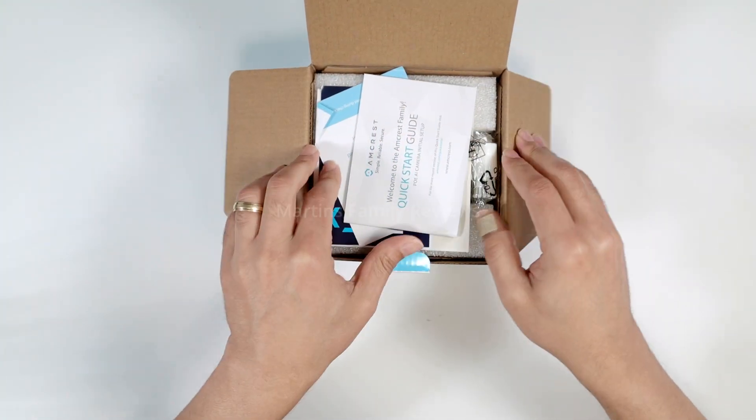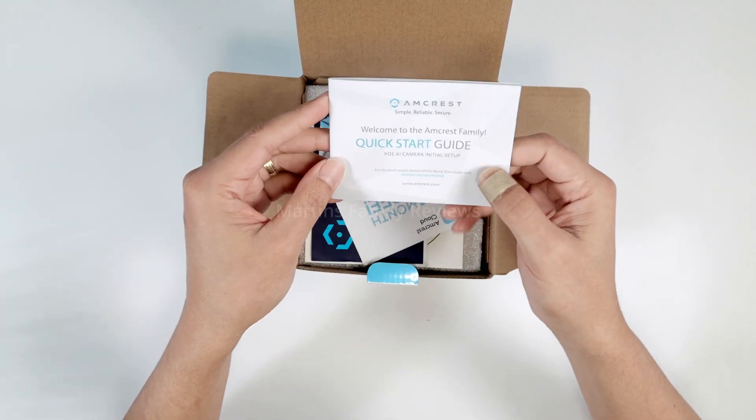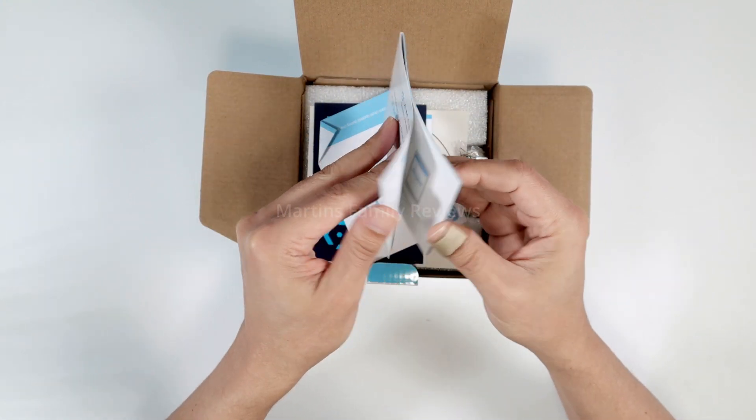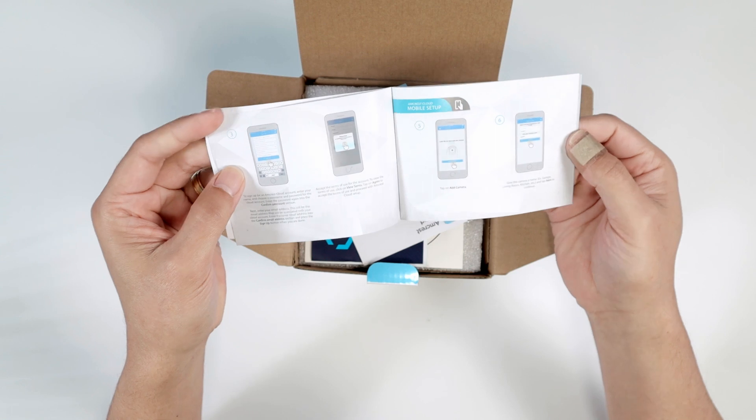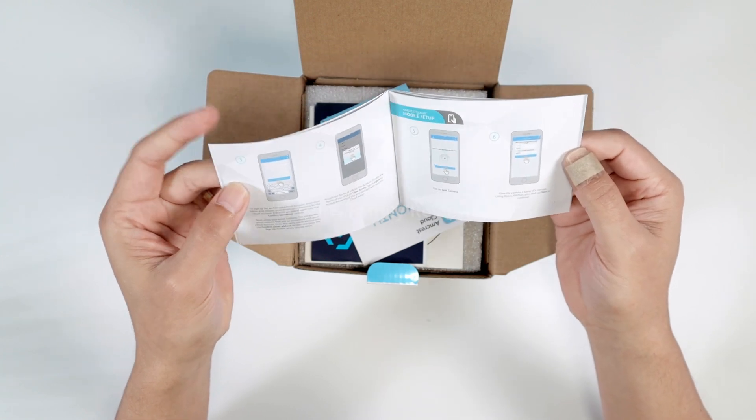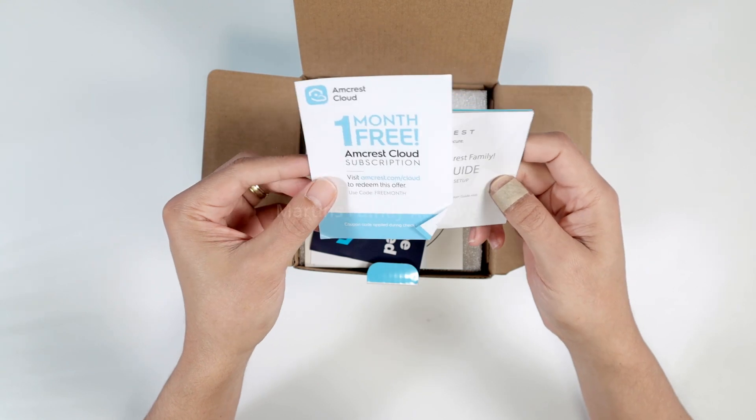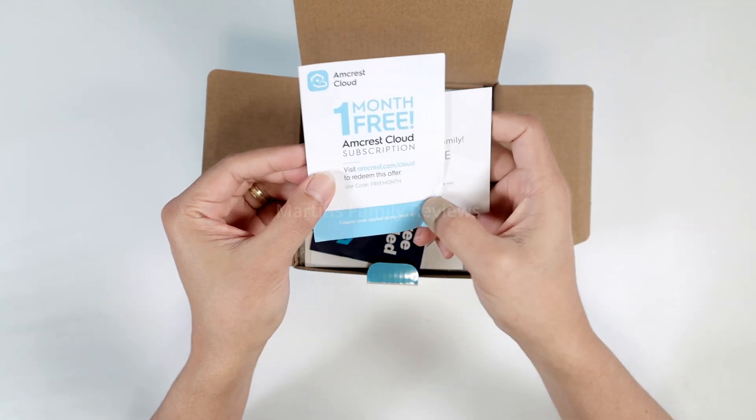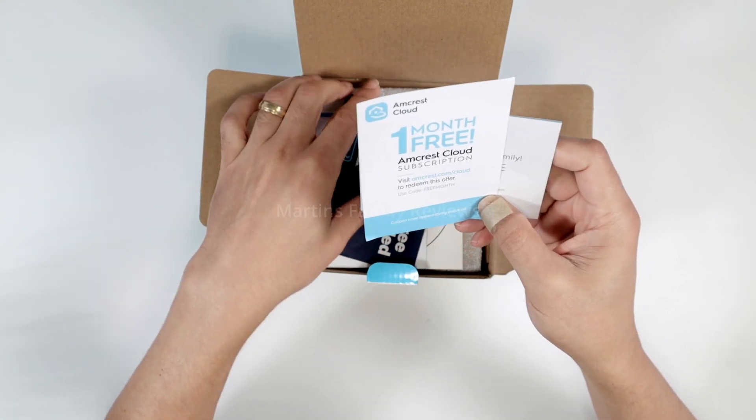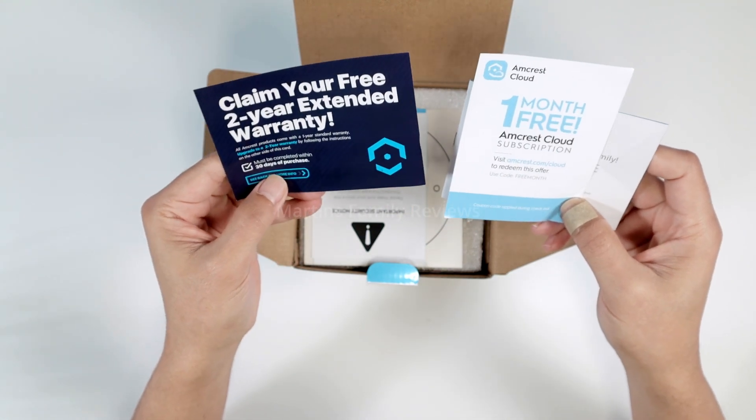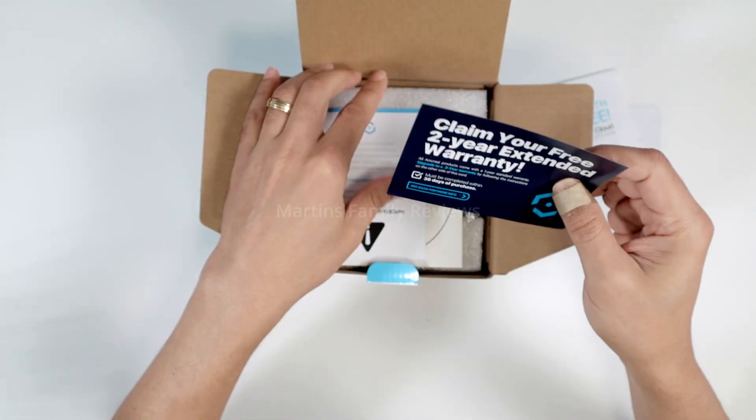Here we go. So it comes with this quick start guide. It's a POE AI camera, so you have all the information here to install on your cell phone. This setup is usually very, very easy. It comes also with this one month free Amcrest cloud subscription, which is pretty good. You can try it out. Warranty, you can claim your warranty. Pretty good.